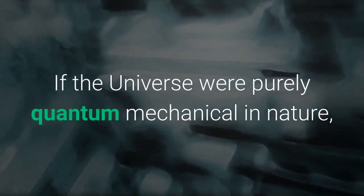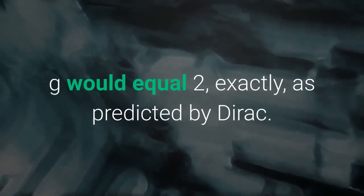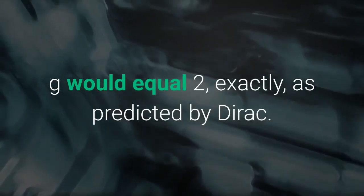If the universe were purely quantum mechanical in nature, G would equal 2, exactly, as predicted by Dirac.